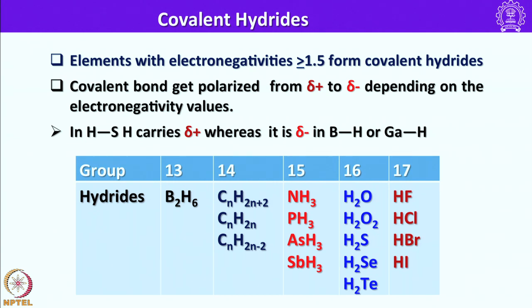Group 16 elements form H2O, H2O2 (hydrogen peroxide), H2S (hydrogen sulfide), hydrogen selenide, and hydrogen telluride. Group 17 elements form hydrogen fluoride, hydrogen chloride, hydrogen bromide, and hydrogen iodide. The polarity of these bonds can be seen by looking at the electronegativity of the heteroatom bonded to hydrogen.